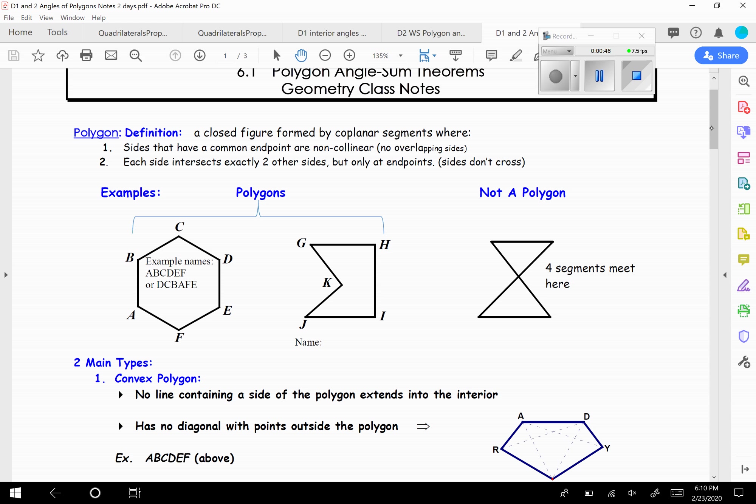And each side intersects exactly two other sides, but only at their endpoints. So their sides don't cross. Over here, we have not a polygon. This one, we got four segments meeting right here. So the sides are crossing, so that makes it not a polygon. But over here, all of these, each side connects at the ends. Nothing's crossing over each other. So that's why those are polygons.